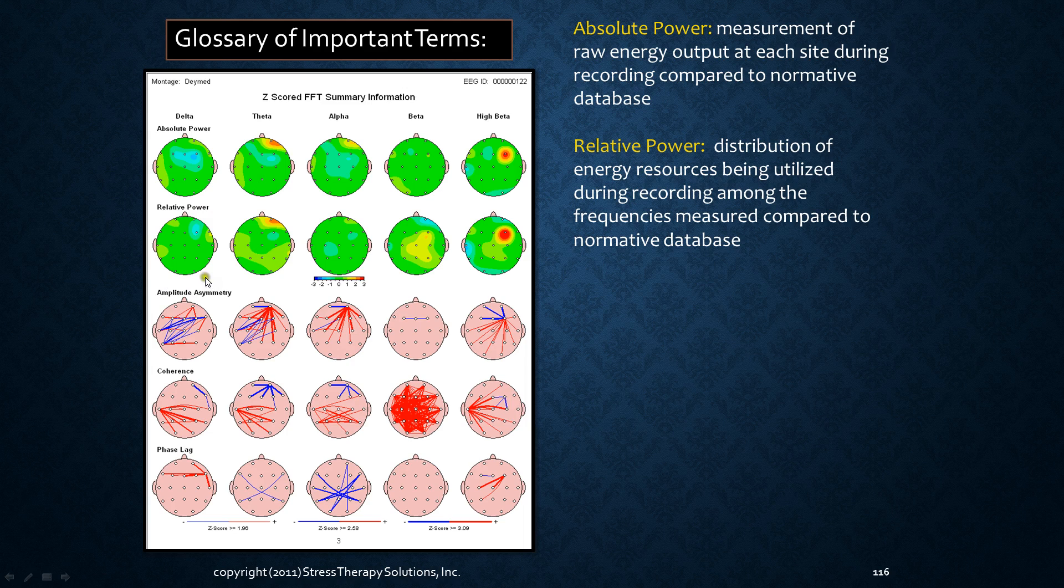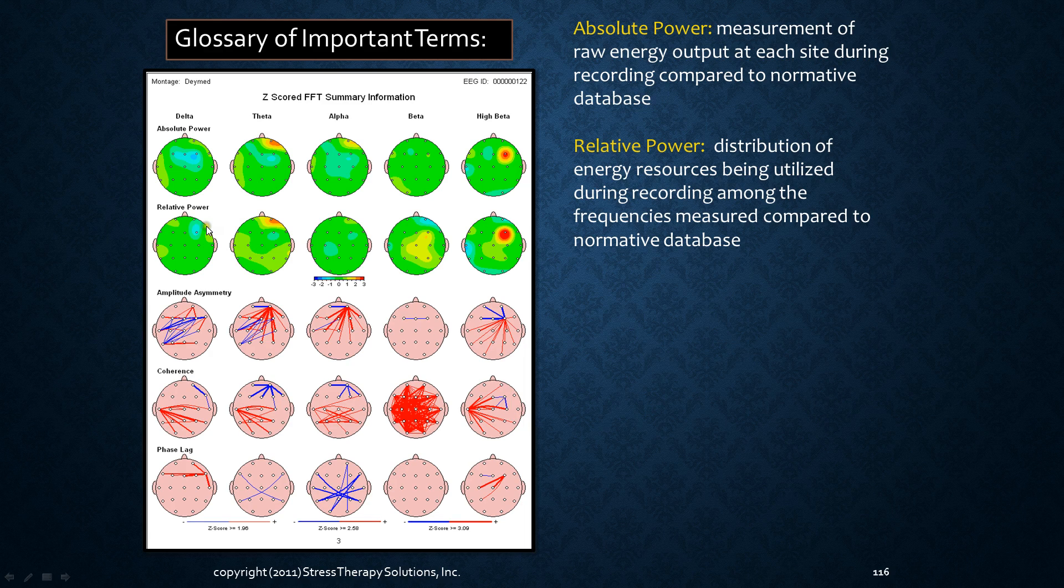So it's telling us that this brain is really allocating resources to delta pretty normally. It thinks it's pretty important except for right here. And we see with this region right here, it's not allocating a lot of resources there and it's actually not creating a lot of power here. So this tells us that not only is it not generating a lot of power, but it doesn't think it's that important to generate that much power. So that might be something that we would train based on what the person's symptoms are compared to the function of this particular site.